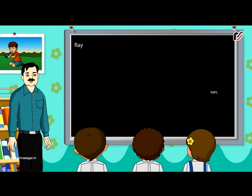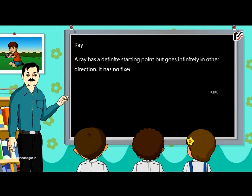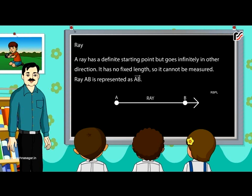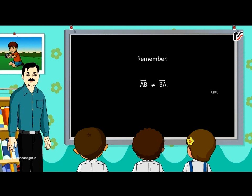Ray. A ray has a definite starting point but goes infinitely in one direction. It has no fixed length so it cannot be measured. Ray AB is represented as AB. Remember, ray AB is not equal to ray BA.